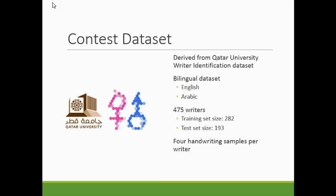The dataset for this contest was derived from the Qatar University Writer Identification Data Set. This is a bilingual handwritten document dataset where the two languages are English and Arabic. 475 writers worth of data were pulled from this dataset and divided into a training set of size 282 and a test set of size 193. Each writer contributed four different handwriting samples, two in English and two in Arabic.